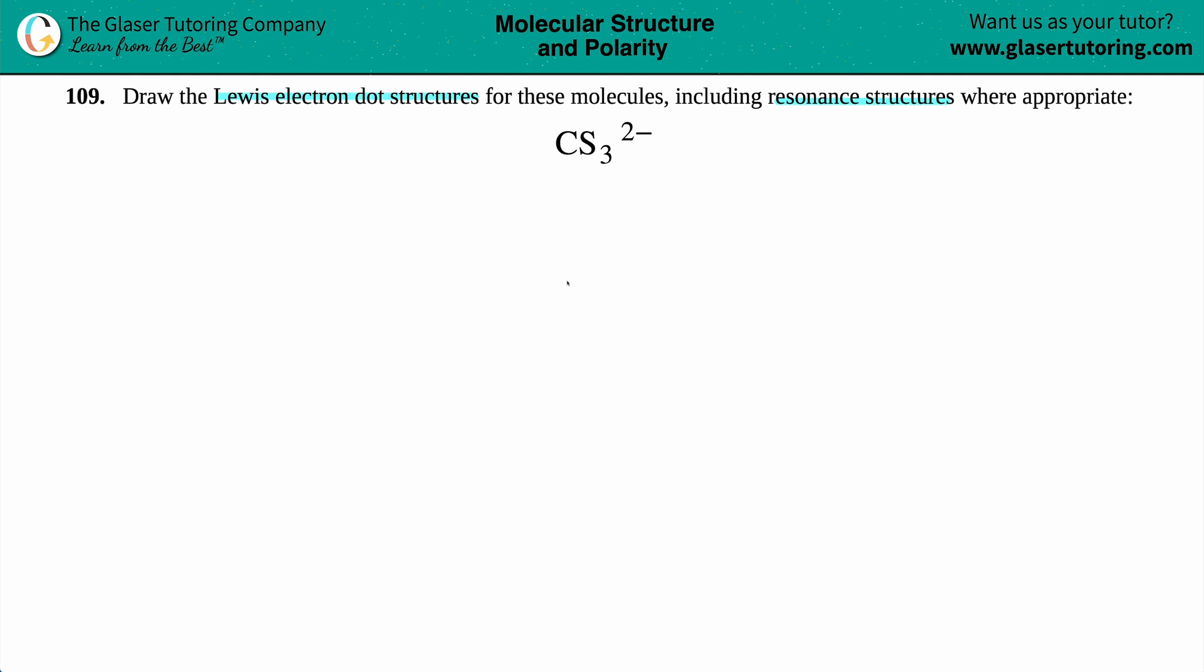In general, remember the least electronegative element is always in the middle. Between carbon and sulfur, carbon is less electronegative. So the carbon will be in the middle, surrounded by the three sulfurs. So I'll do one here, and one, two, three around it.